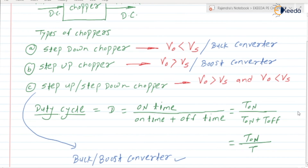Apart from this, depending on the quadrant of operation, there are five types of chopper: Type A, Type B, Type C, Type D, and Type E. We are going to discuss these circuits. So this is the introduction of the chopper. In the next video, we are going to discuss the buck converter or the step-down chopper. Thank you.